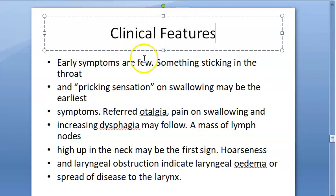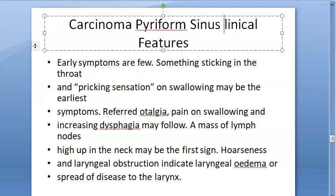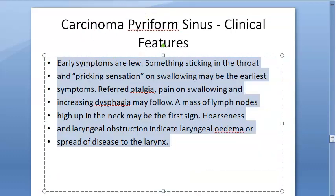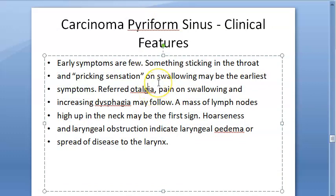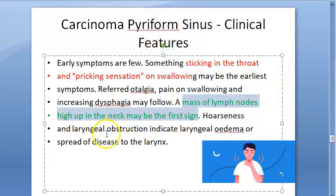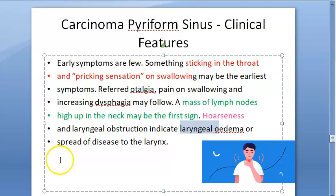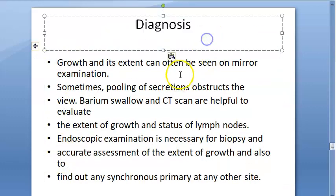Clinical features of carcinoma of the pyriform sinus: it is often asymptomatic initially. The earliest symptom may be a sticking or pricking sensation in the throat on swallowing. Referred otalgia occurs via the vagus nerve. Pain on swallowing and increasing dysphagia follow. A mass of lymph nodes high up in the neck may be the first sign to attract attention. Hoarseness of voice and laryngeal obstruction due to laryngeal edema can also occur.